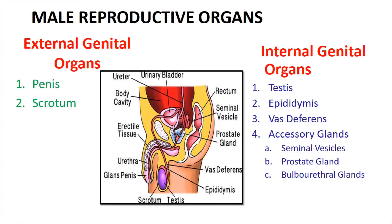Which are the internal genital organs? First one is the testis, which is located inside the scrotum. Then, on the upper side of the testis, there is the epididymis. Then vas deferens. Then three accessory glands — seminal vesicle, prostate gland, and bulbo-urethral glands — which are very helpful for the production and development of semen.